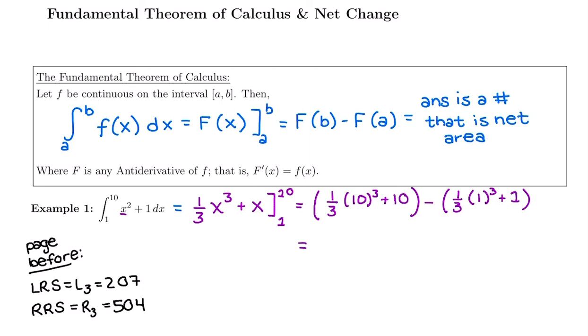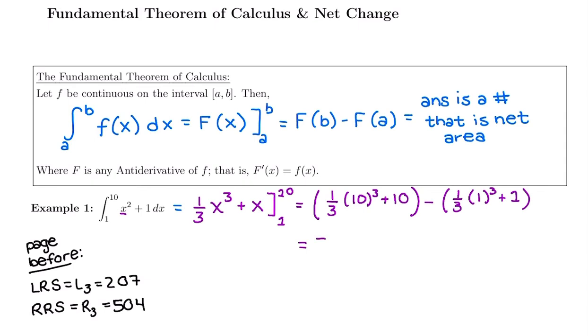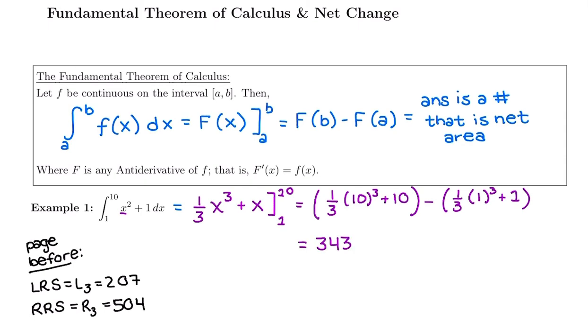So we would plug in each bound into our calculator. You might need to put 1 third in parentheses since it's a fraction. So you have parentheses 1 third and then parentheses 10 cubed plus 10, which is going to give you 343.3 repeating. Minus doing 1 third in parentheses times 1 cubed plus 1 is going to give you 1.3 repeating.